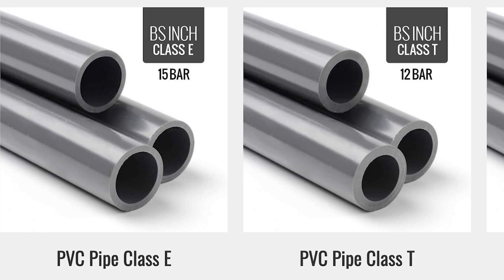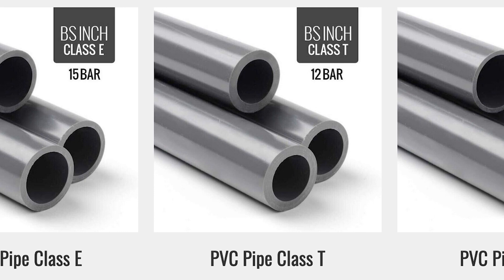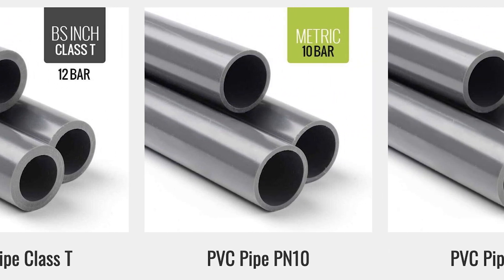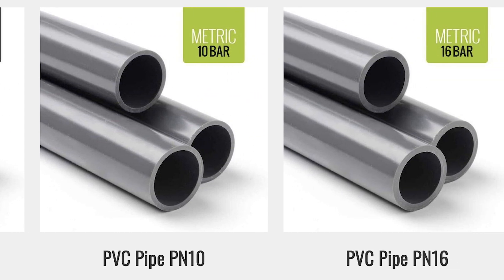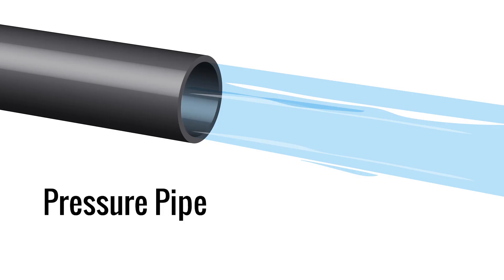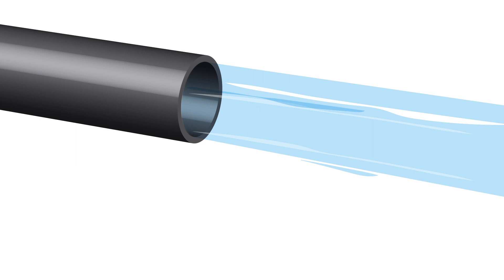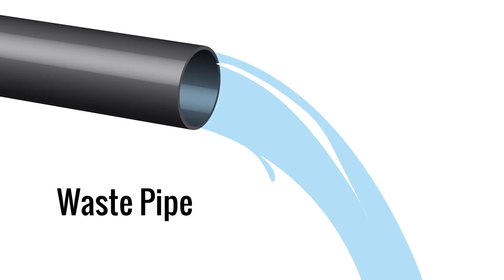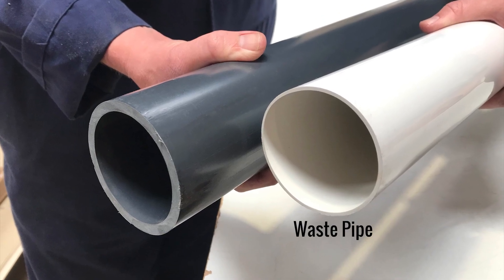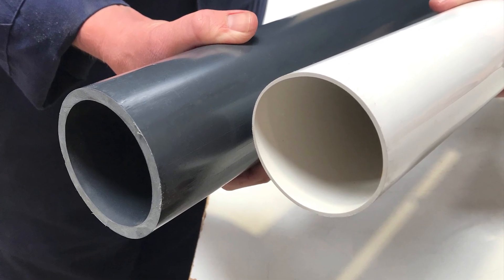Hello and welcome. Today I'm going to be talking you through the way that UPVC and ABS pressure pipe is rated and classed according to its pressure handling capabilities. All pressure pipe is designed to convey fluids or media under higher pressure; this differs from waste or drainage pipe that is designed to convey media under gravity. The way in which pressure pipe deals with the elevated pressure is by way of an increased wall thickness.